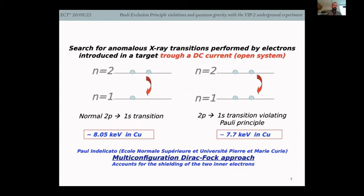Experimentally, you introduce current in a target and look for an anomalous X-ray originating from a PEP violation. In the schematic, a normal 2p-to-1s transition occurs when the n=1 state is free — in copper, our target, this happens at 8.05 keV. In the violating case, the n=1 state is already occupied by two electrons, so a 2p-to-1s transition would violate the Pauli Exclusion Principle.